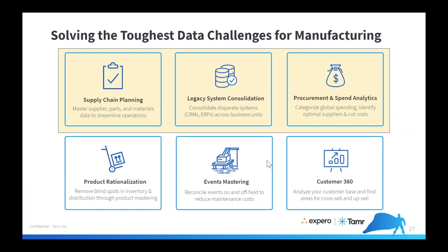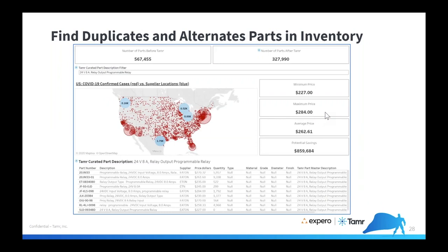How do we apply this? The typical use cases are some of the toughest data challenges in manufacturing around supply chain planning: mastering parts and suppliers, procurement and spend analytics, categorizing global spend, or legacy system consolidations — where you take multiple ERP or MES systems and start consolidating them. Projects like these are exactly where Tamr is used. I want to show three outcomes from Tamr, a couple of examples, and then run through a quick demo of the workflow — how you would actually do it in Tamr.